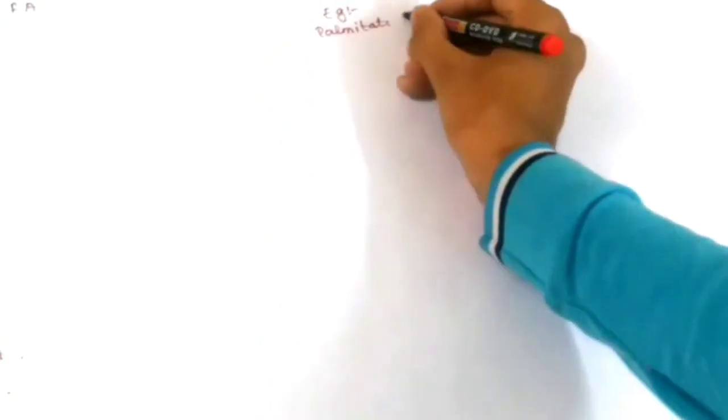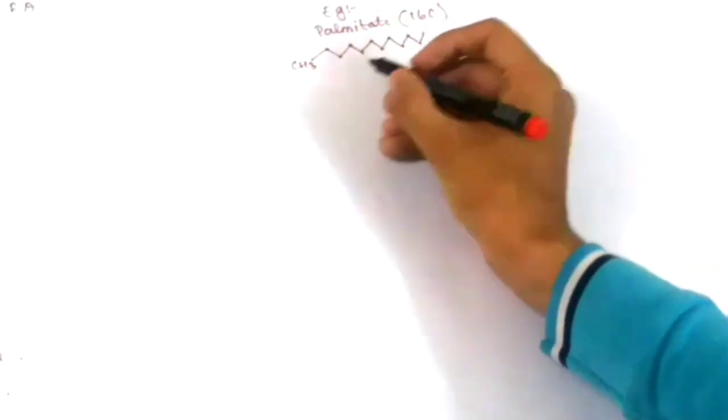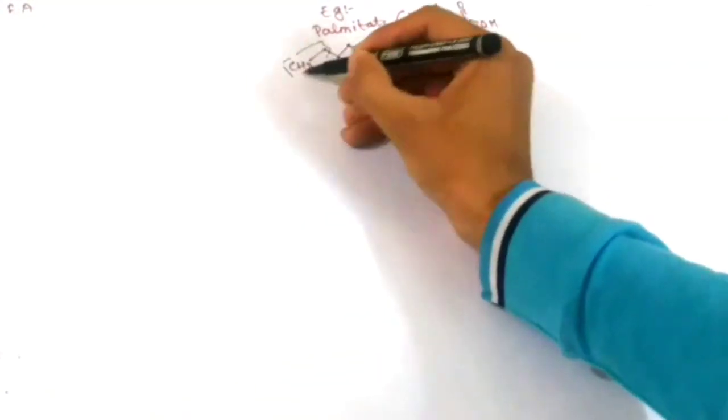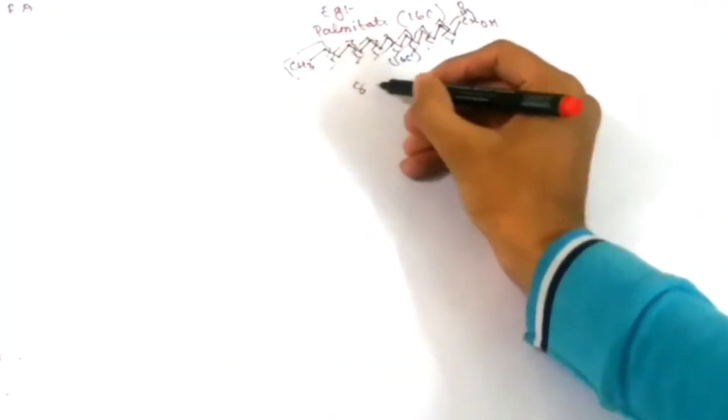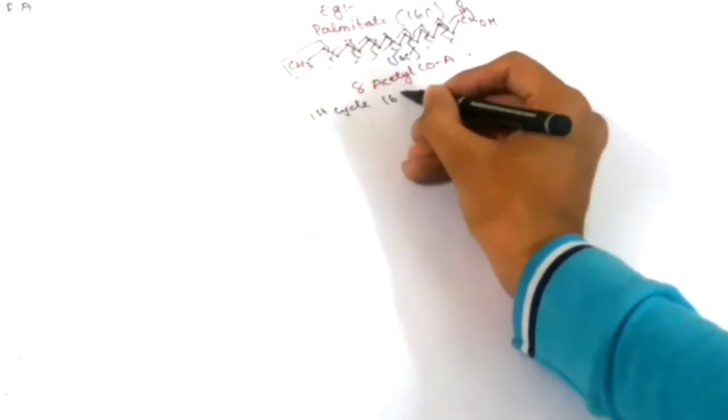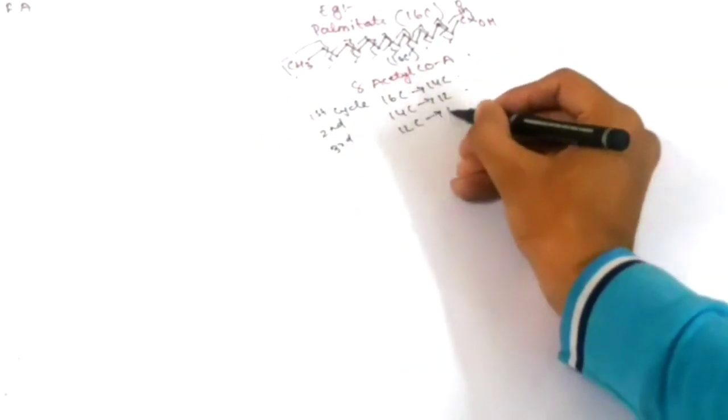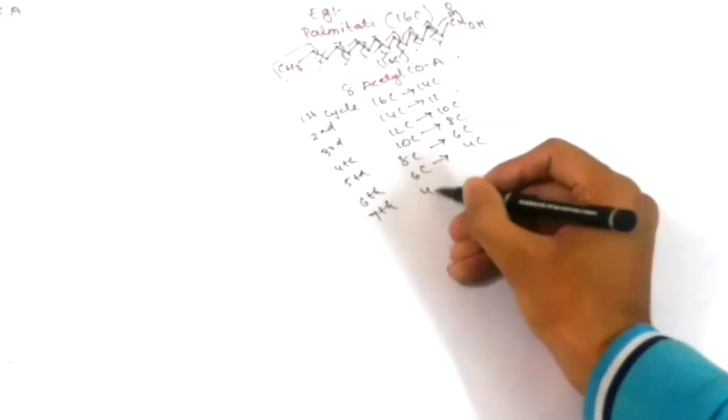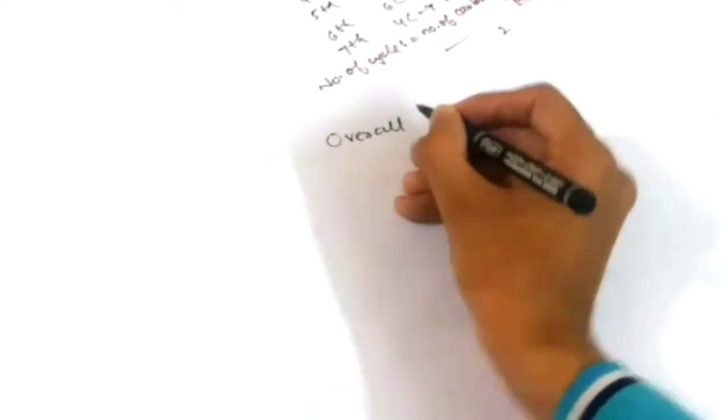Now let's see beta-oxidation in saturated fatty acids with the example of palmitate, which is a 16-carbon fatty acid. This palmitate molecule undergoes 7 beta-oxidation cycles to give 8 molecules of acetyl-coenzyme A, with a reduction of 2 carbons in each cycle. In the 7th cycle, the number of carbons becomes 4, that is 2 carbon plus 2 carbon. The number of cycles equals the number of carbons divided by 2 minus 1. The overall reaction is: palmitoyl-coenzyme A + 7 NAD+ + 7 H2O + 7 FAD + 7 coenzyme A yields 8 acetyl-coenzyme A + 7 FADH2 + 7 NADH + H+.